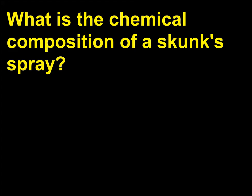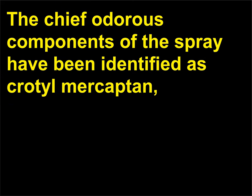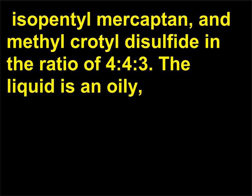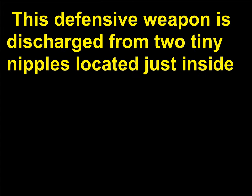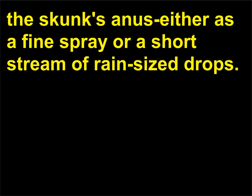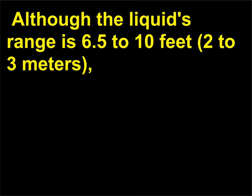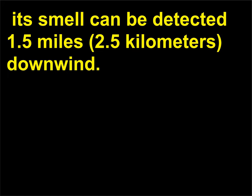What is the chemical composition of a skunk's spray? The chief odorous components of the spray have been identified as crotyl mercaptan, isopentyl mercaptan, and methyl crotyl disulfide in the ratio of 4:4:3. The liquid is an oily, pale yellow, foul-smelling spray that can cause severe eye inflammation. This defensive weapon is discharged from two tiny nipples located just inside the skunk's anus, either as a fine spray or a short stream of rain-sized drops. Although the liquid's range is 6.5 to 10 feet (2 to 3 meters), its smell can be detected 1.5 miles (2.5 kilometers) downwind.